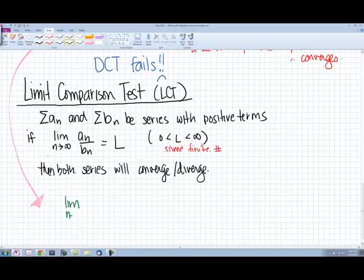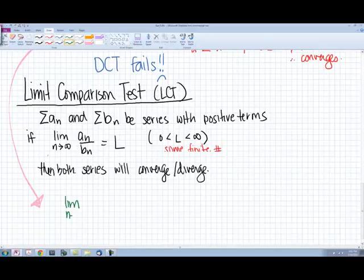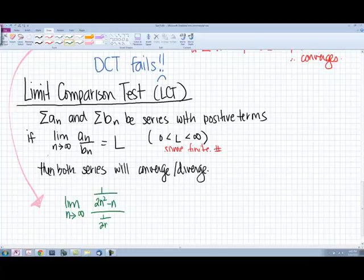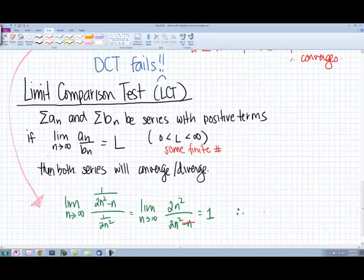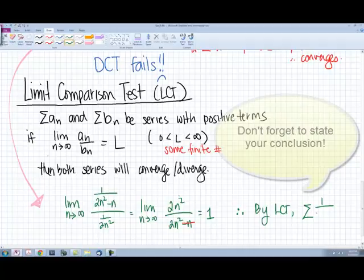So the limit as n approaches infinity of 1 over 2n squared minus n over 1 over 2n squared. Flipping the fraction, we have limit as n approaches infinity of 2n squared over 2n squared minus n. Because this limit is as n approaches infinity, we're only going to look at the higher power. So we can basically ignore the minus n. And we're going to get that this limit equals to 1. So once we get that limit equals to 1, we can say, therefore, by the LCT,